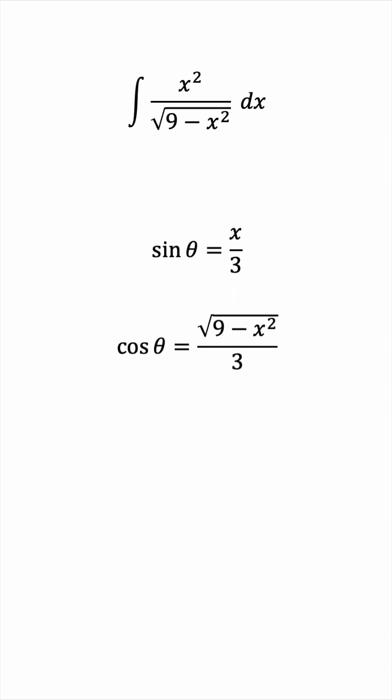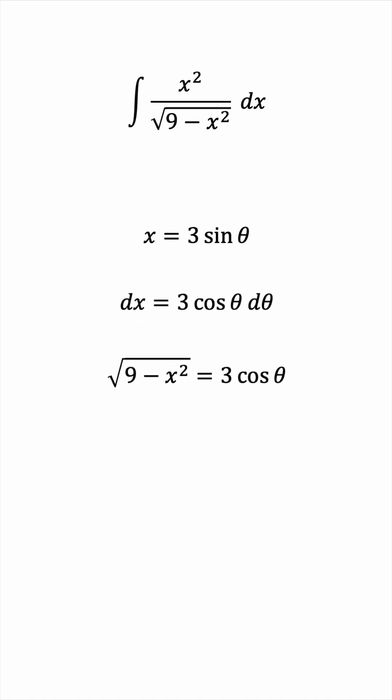We can rearrange these two equations to solve for x and for the square root we see in the integrand. The last bit of information we need is dx, the differential term, and we can get that easily by differentiating the equation for x, which gives us 3 cosine theta d theta.